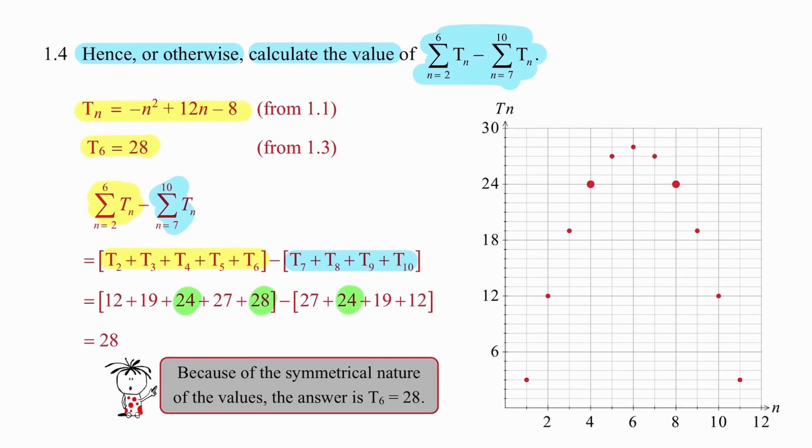If we understand the quadratic pattern properly we will know that on either side of the symmetry line we get matching values. So if I work out that the second term is 12 I can link that value to the tenth term without having to calculate. Again if I work out the third term and make the connection that that term is equal to the ninth term I can simply substitute that value without calculation. And finally the fifth term if I work that out can be linked to the seventh term without a second calculation. We can see clearly that if we subtract these two expressions we will end up with a value of 28.